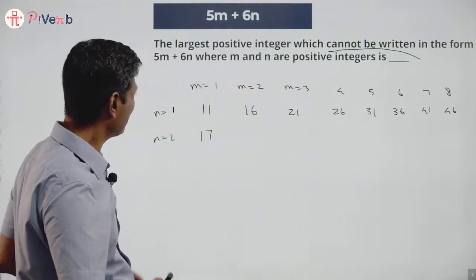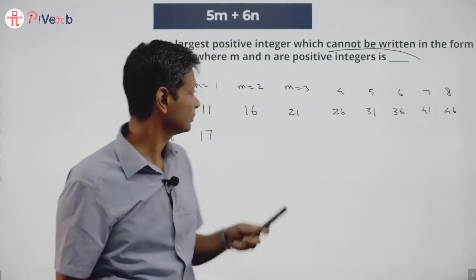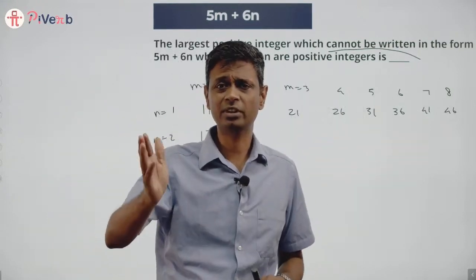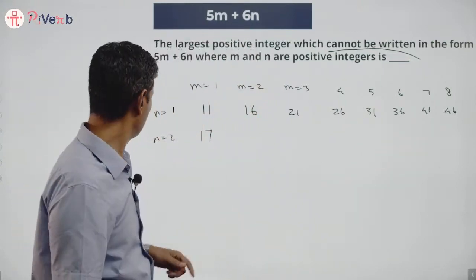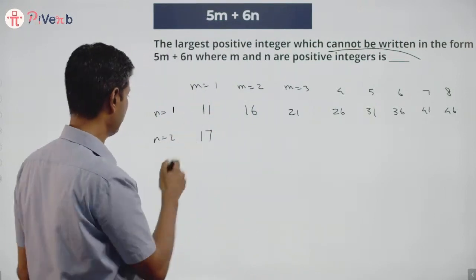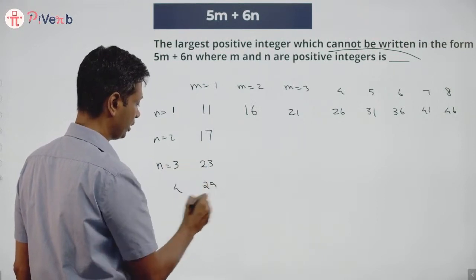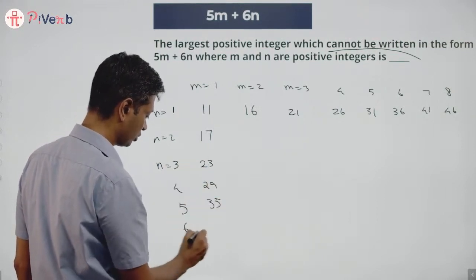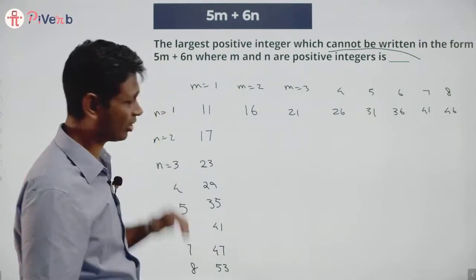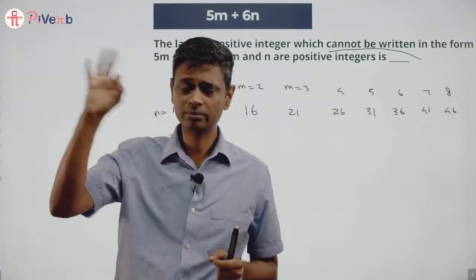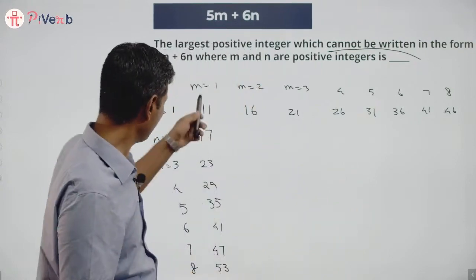What am I effectively doing? I put m=1, n=1, got 11 — and I can keep adding 5 to get more numbers. Similarly with n=2: 17, 23, 29, 35, 41, 47, 53 and so on. Once I have one sum, I can keep adding 5 to it, or keep adding 6 to it — I can generate a whole sequence of achievable numbers.